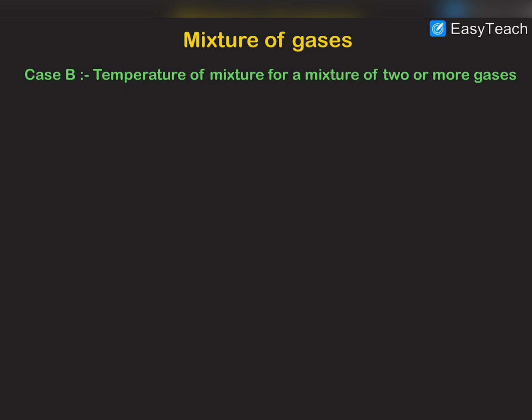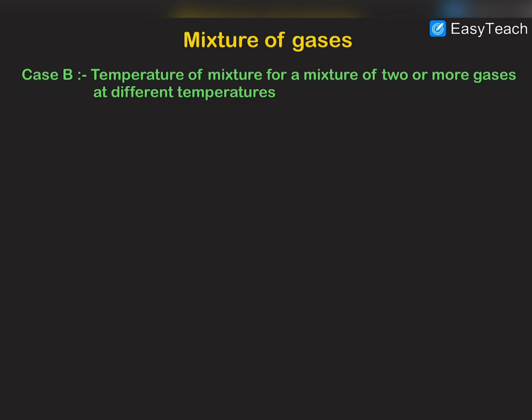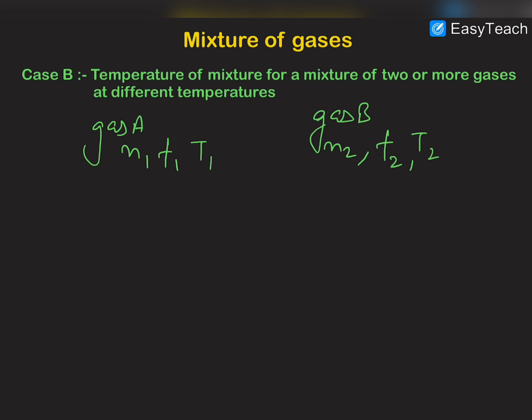Now we discuss Case B, where we mix two or more gases at different temperatures. Let us assume gas A has N1 moles, F1 degrees of freedom, and temperature T1. Gas B has N2 moles, F2 degrees of freedom, and temperature T2. When we mix these two gases, heat will flow from higher temperature to lower temperature until the mixture reaches a common equilibrium temperature. It is also obvious that these gases are not inter-convertible or reactive with each other.